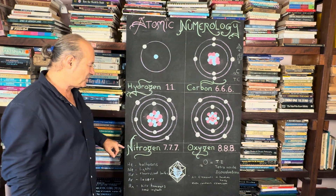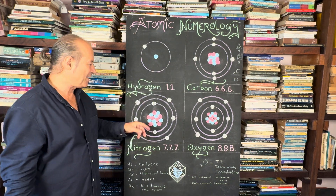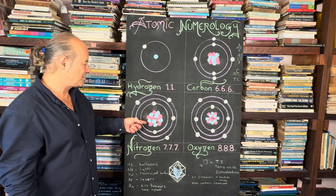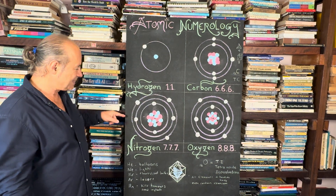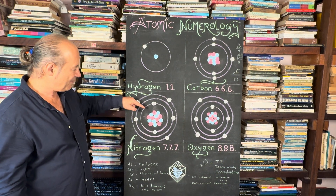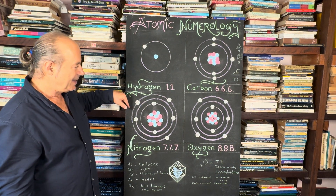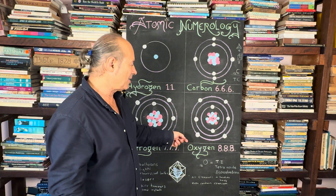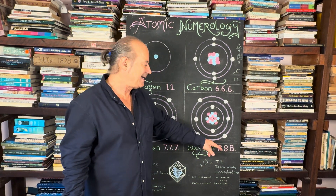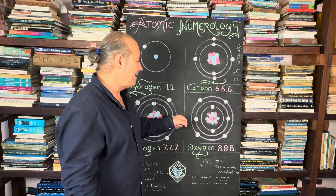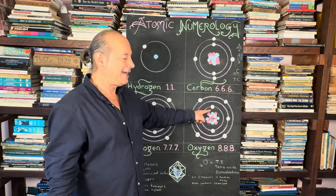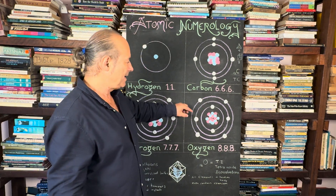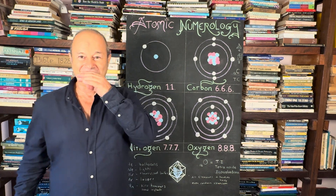We move to nitrogen. You can predict now that nitrogen has seven protons, seven neutrons, and seven electrons in three various shells. Then we go to oxygen, which is what we all breathe. Oxygen has a configuration of 888 because it has eight neutrons, eight protons, and eight electrons in its shell.